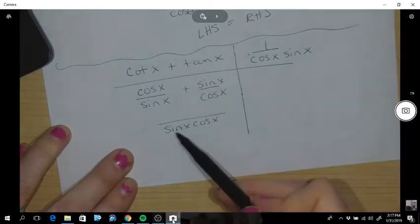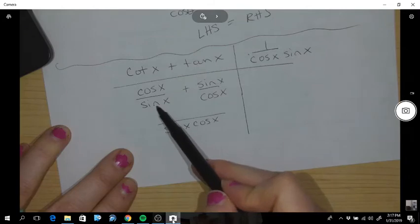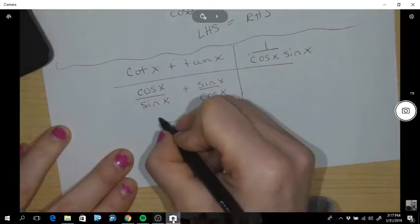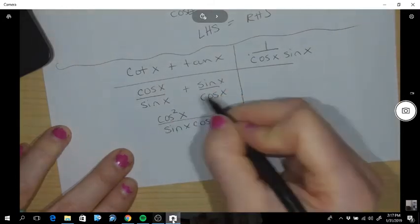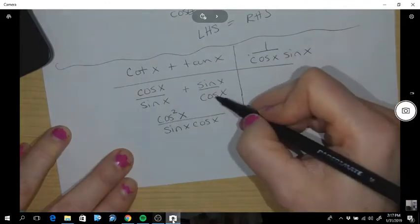So if I put it over common denominator I therefore times this term by cos x. So times this by cos x. So cos squared x.